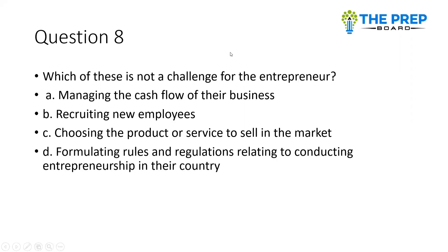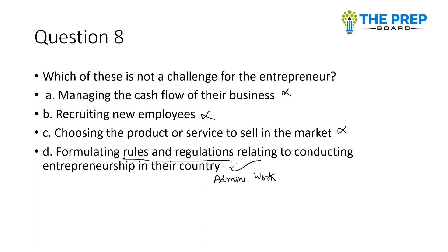Which of these is not a challenge for an entrepreneur? Options include: choosing a product or service to sell, managing cash flow, recruiting new employees, or formulating rules and regulations related to conducting entrepreneurship. Managing cash flow is definitely very challenging; recruiting new employees is also challenging; choosing a product or service is challenging. The correct answer is option D — formulating rules and regulations is not a challenge for the entrepreneur.